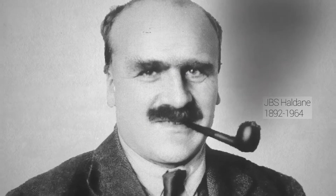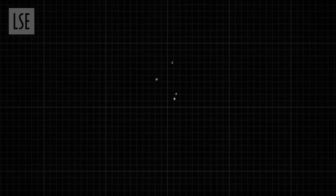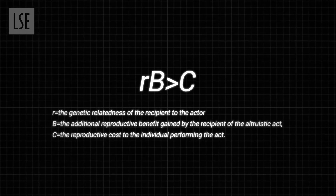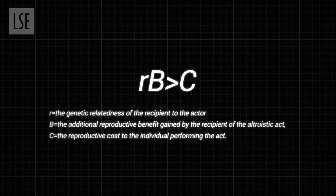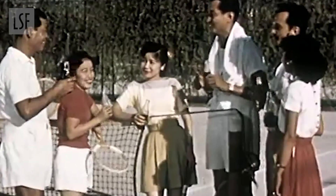J.B.S. Haldane was asked the question, would you save a brother? And he said, I wouldn't save a brother, but I'd save two brothers or eight cousins. Later on, Bill Hamilton formalized this idea when he developed the E equals MC squared of evolutionary biology: R times B is greater than C — that is, relatedness multiplied by the benefit has to be greater than the cost. This, what we call inclusive fitness or kin selection, explains why it is that we love our families and we favor our families at the expense of others.